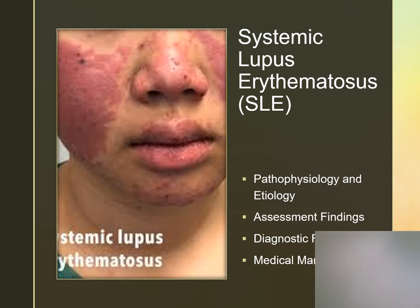SLE does affect more women than men, usually between the ages of 15 to 45. African Americans, Hispanic, Asian, and Native Americans are the ones it's most prevalent in. These clients will have remissions and exacerbations, including a facial rash — that very distinctive butterfly rash — behavioral disturbances, fluid retention, proteinuria, hematuria, and many other symptoms.